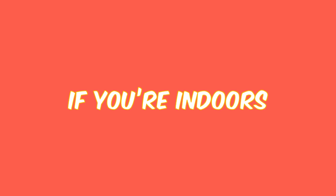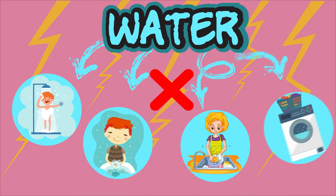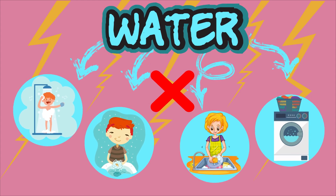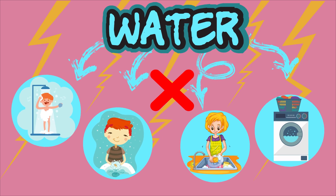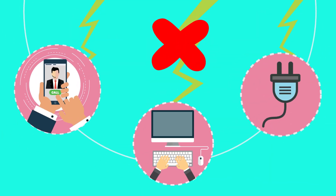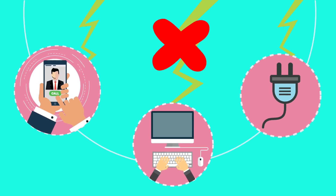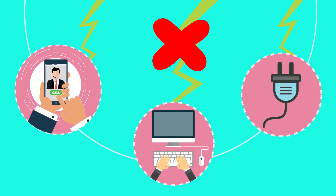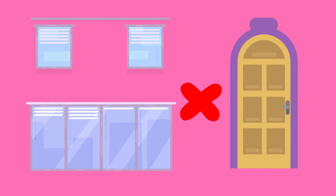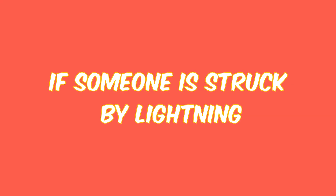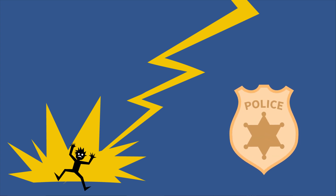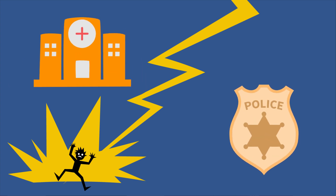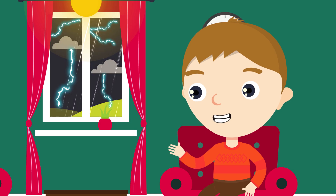If you're indoors, avoid water — it's a great conductor of electricity. So don't take a shower, wash your hands, wash dishes, or do laundry. Do not use a corded telephone, as lightning may strike exterior phone lines. Do not use electrical equipment like computers and appliances during a storm. Stay away from windows and doors, and stay off porches. If someone is struck by lightning, call for help — call the police or send for help immediately. The injured person does not carry an electrical charge, so it is okay to touch them.